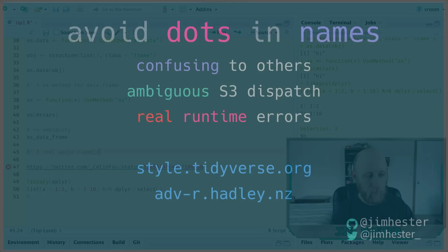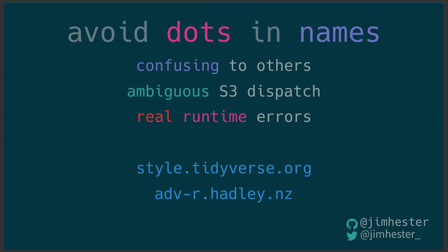Because of this, I really strongly suggest you avoid having dots in your names. It's confusing to users coming from other languages, it's ambiguous as a result of S3 dispatch, and it can result in real runtime errors as we saw in Colin's example. If you want suggestions on the styles we use in the Tidyverse, go to style.tidyverse.org for our full style guide. And if you're interested in more details on S3 dispatch, see the S3 chapter of Advanced R by Hadley Wickham. Thanks for listening and I'll see you guys next time.